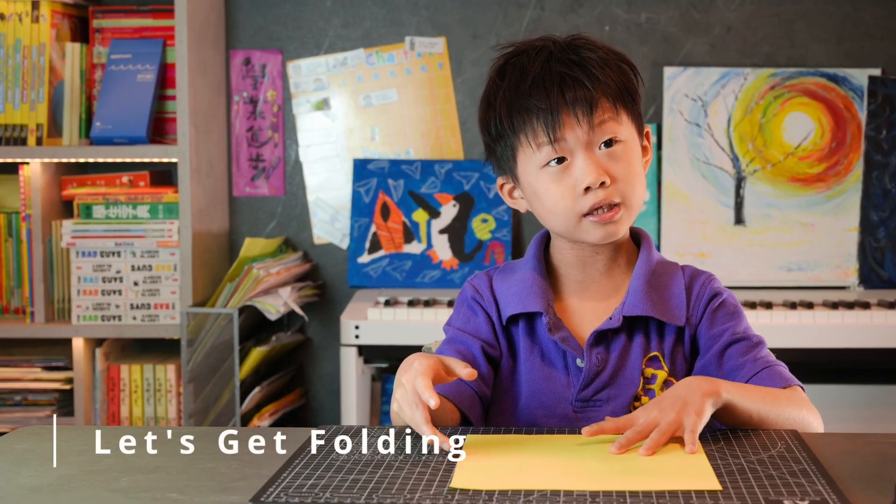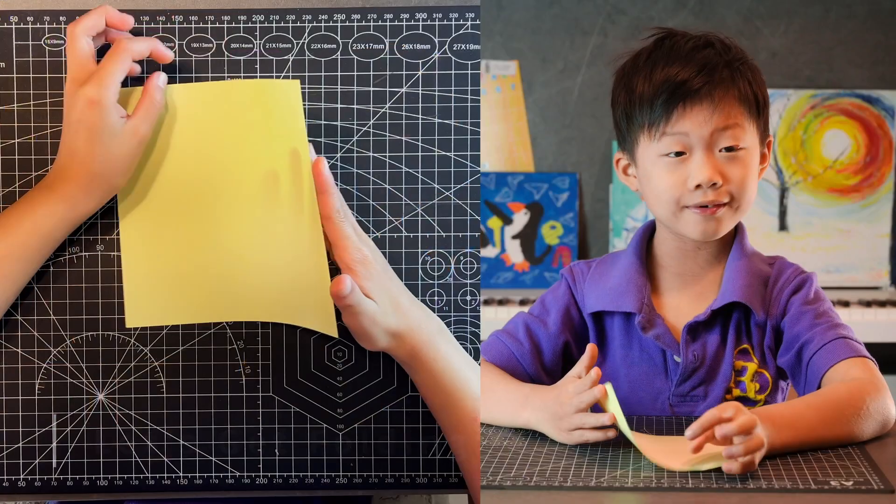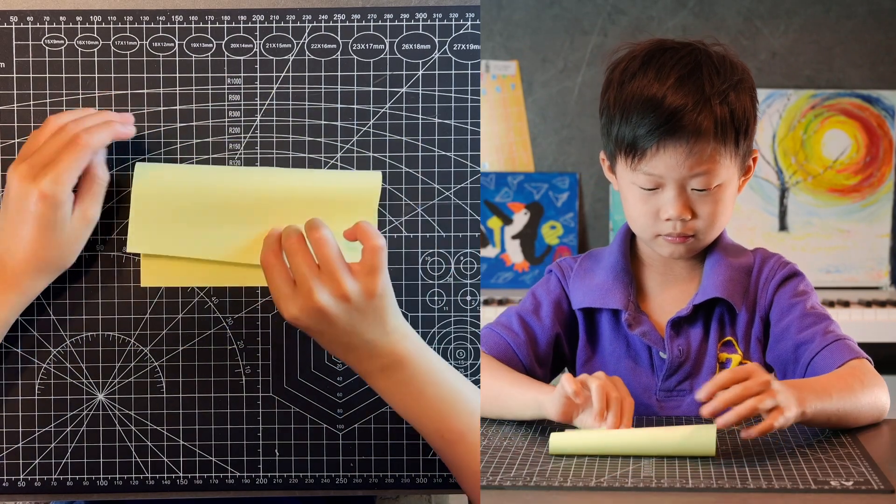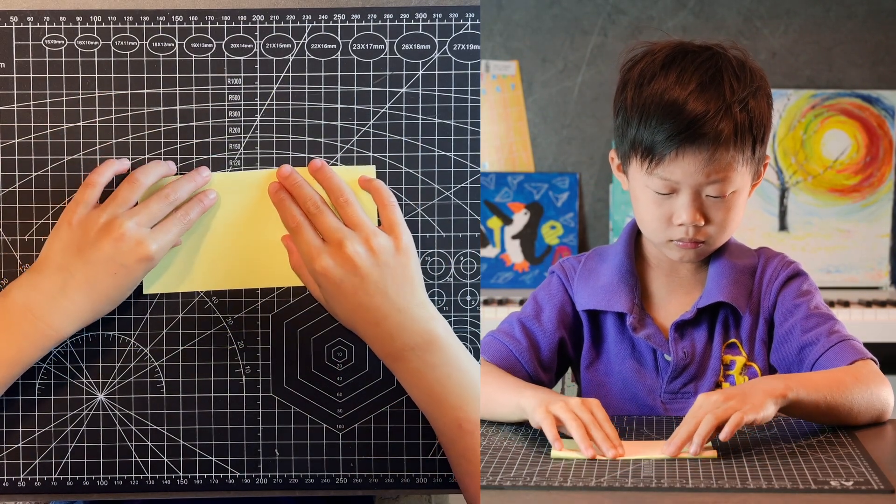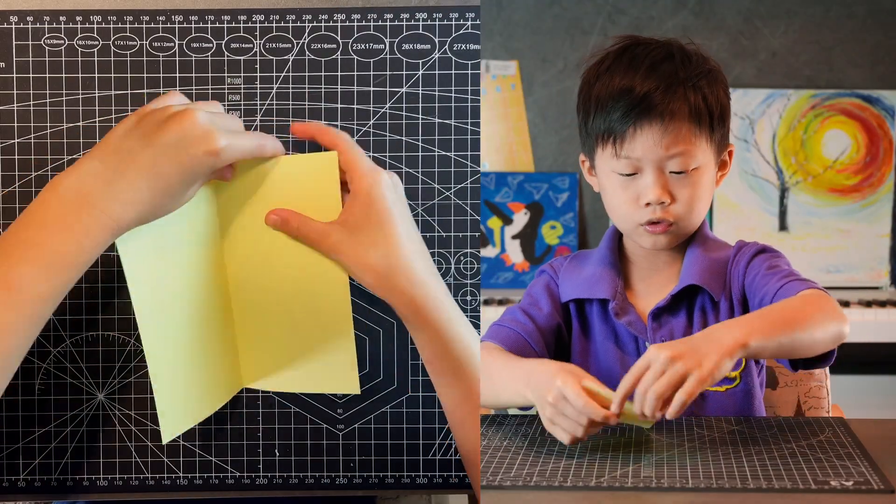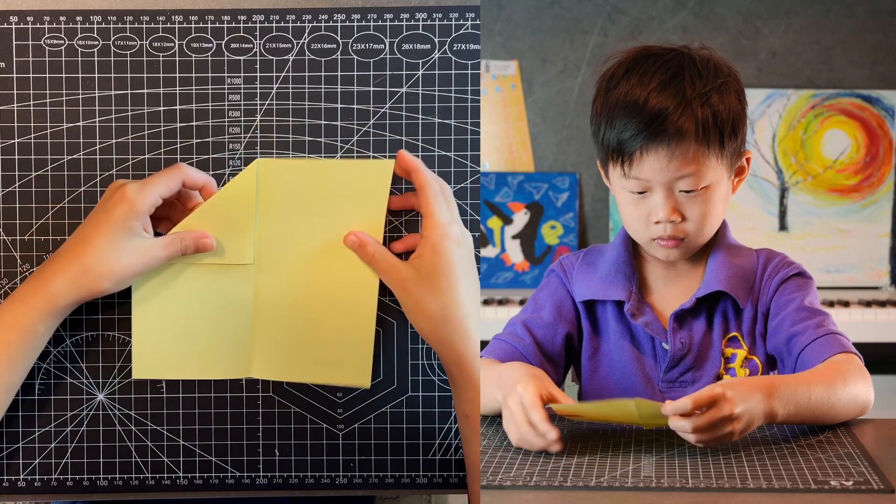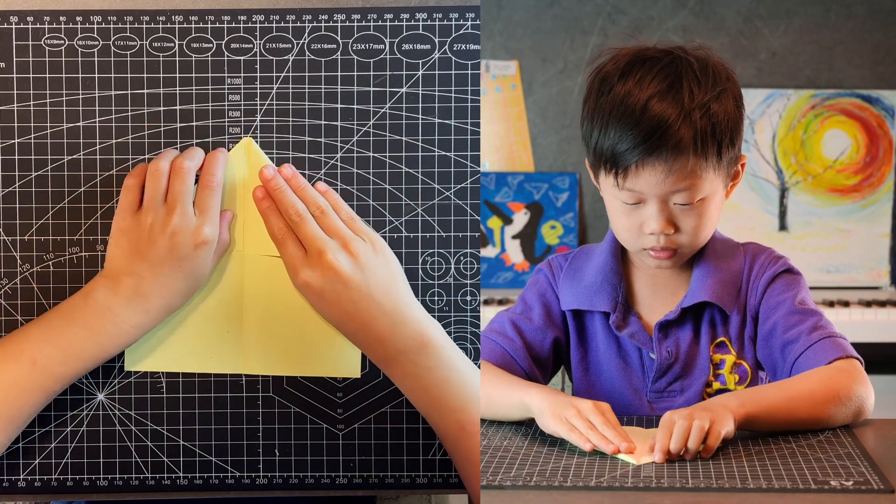So let's get folding the Key One Cannet. Fold your right edge to your left, fold your top edge into your center crease. Do the same thing on your other side.